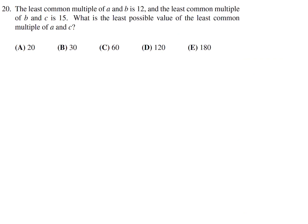The least common multiple of A and B is 12. The least common multiple of B and C is 15. What is the least possible value of the least common multiple of A and C? 12 is 2 times 2 times 3. That's the LCM of A and B. Let A be 2 times 2, and let B be 3. Then the LCM of B and C is 15, which is 3 times 5. B is already 3, so C must be 5. The least common multiple of A and C would be 2 times 2 times 5, which is 20. Number 20, the answer is A.